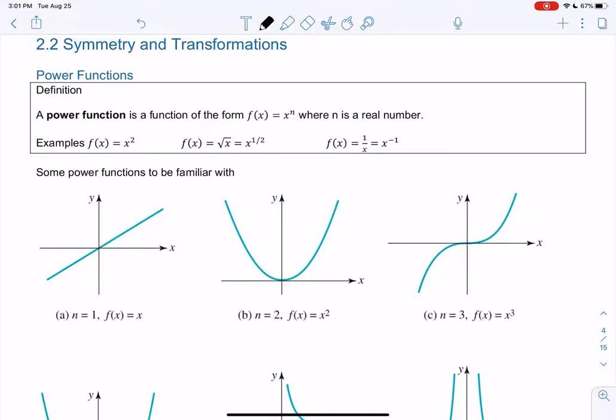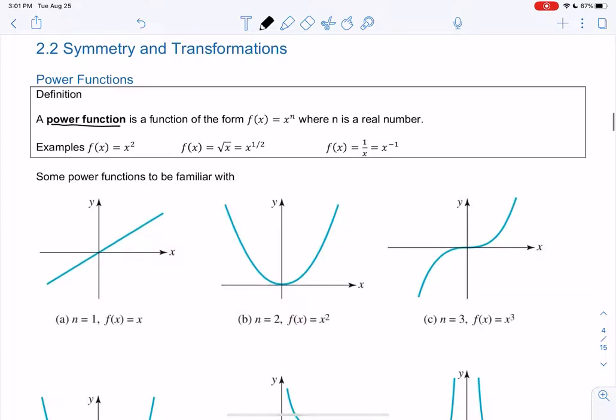Let's look at section 2.2, symmetry and transformations. I'm going to start with a power function. We've probably seen them, but maybe not known them by name. A power function is any function in the form of f(x) = x^n, where n can be any real number. So it could be x squared, but it could also be fractions or negative numbers. A square root would be a power function, because it's x to the 1/2.